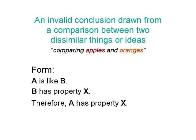A false analogy is an invalid conclusion drawn from a comparison between two dissimilar things or ideas. It's like comparing apples and oranges. The form of a false analogy fallacy is as follows: A is like B, and B has property X, therefore A has property X.